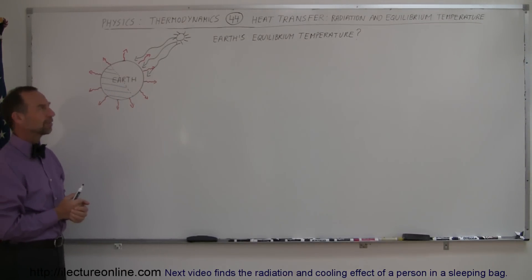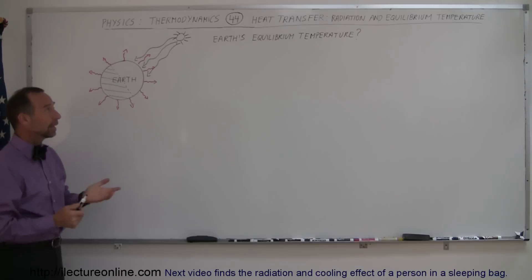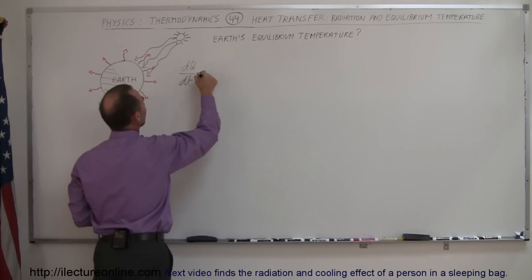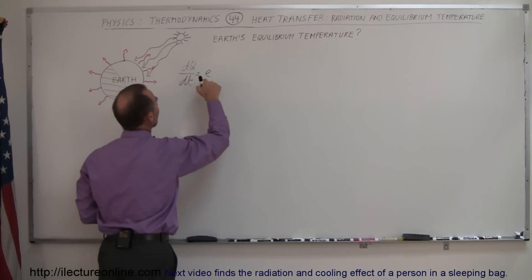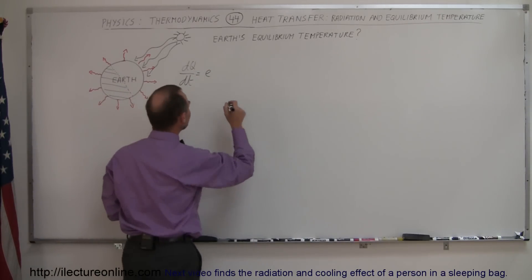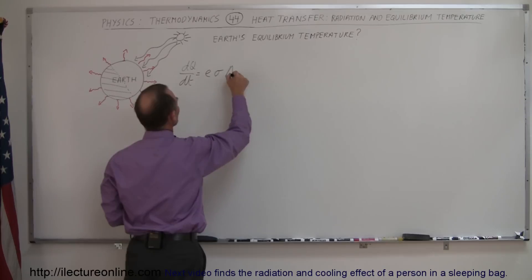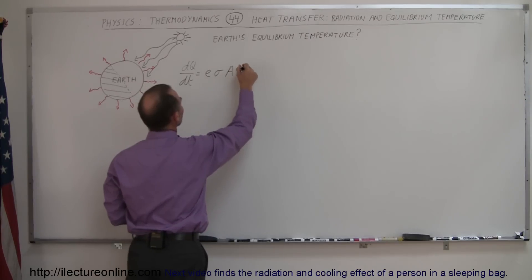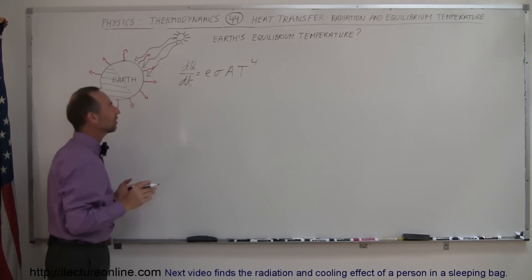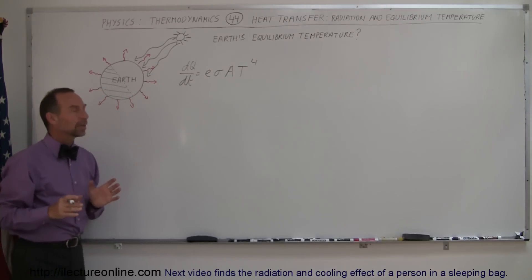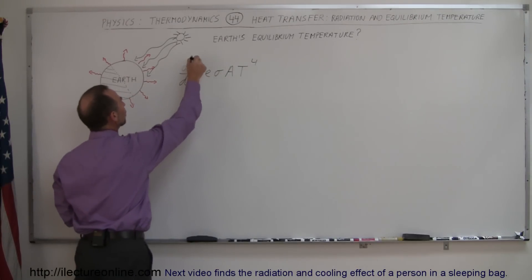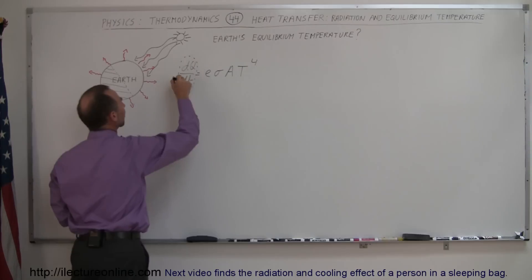What would the temperature of the Earth be in that case? We can say that the dQ/dt is equal to the emissivity — for the Earth that's probably about 0.9 — times sigma, times the surface area, times temperature to the fourth power. We can then go ahead and calculate how much energy the Earth receives from the Sun.